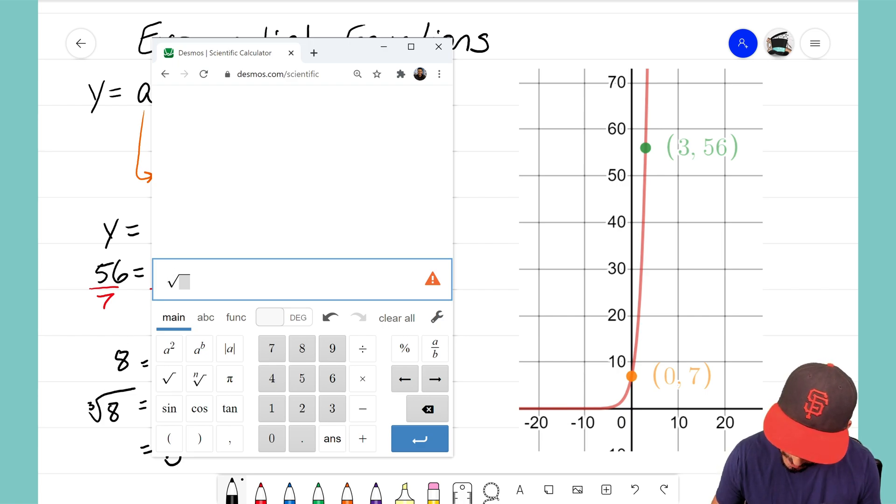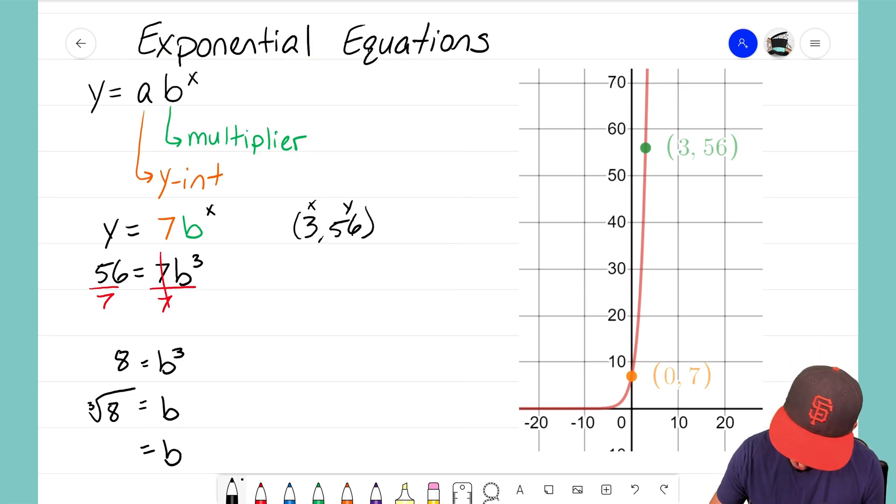And then I need to change what's underneath the radical to an 8 and I see that the cube root of 8 is 2.